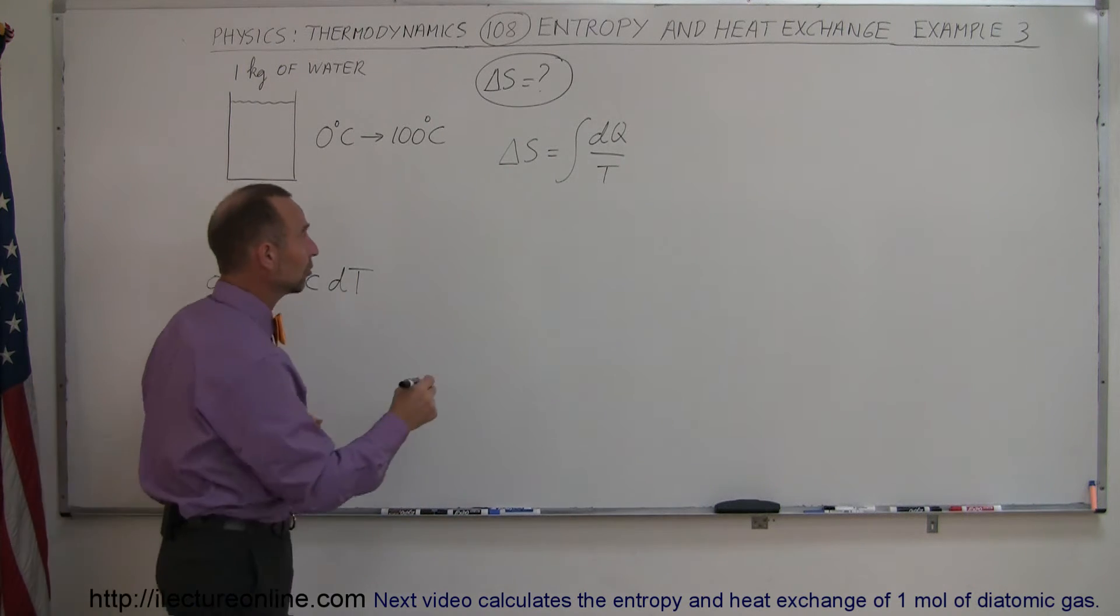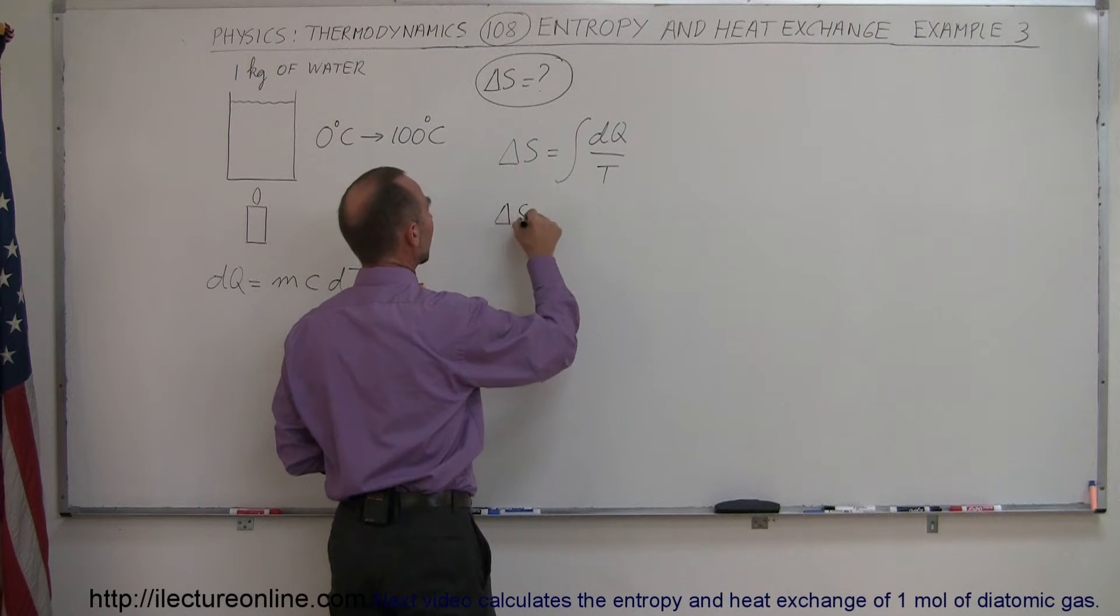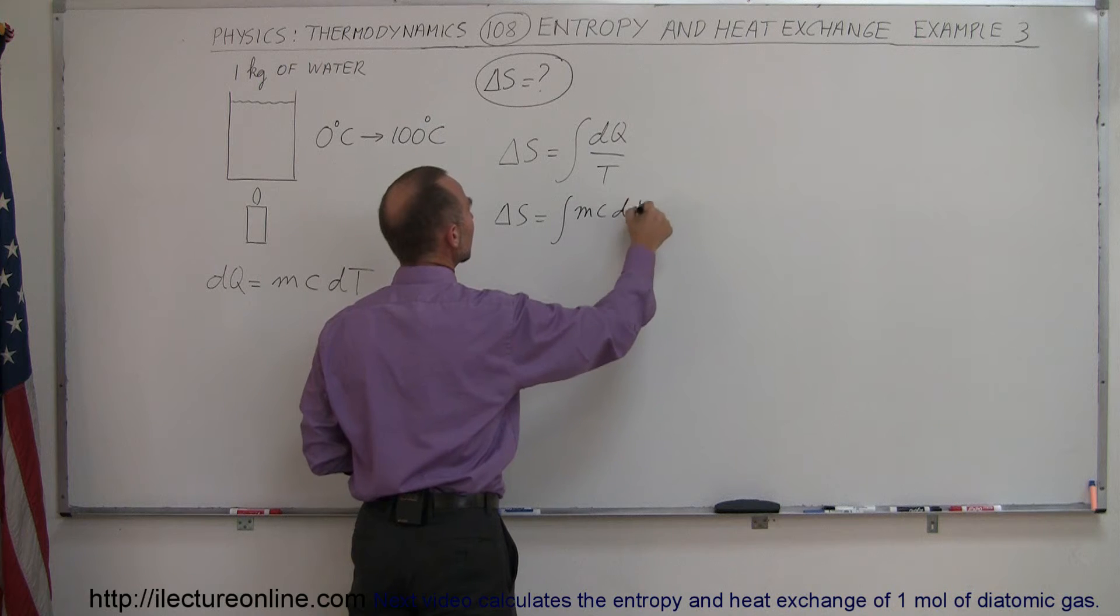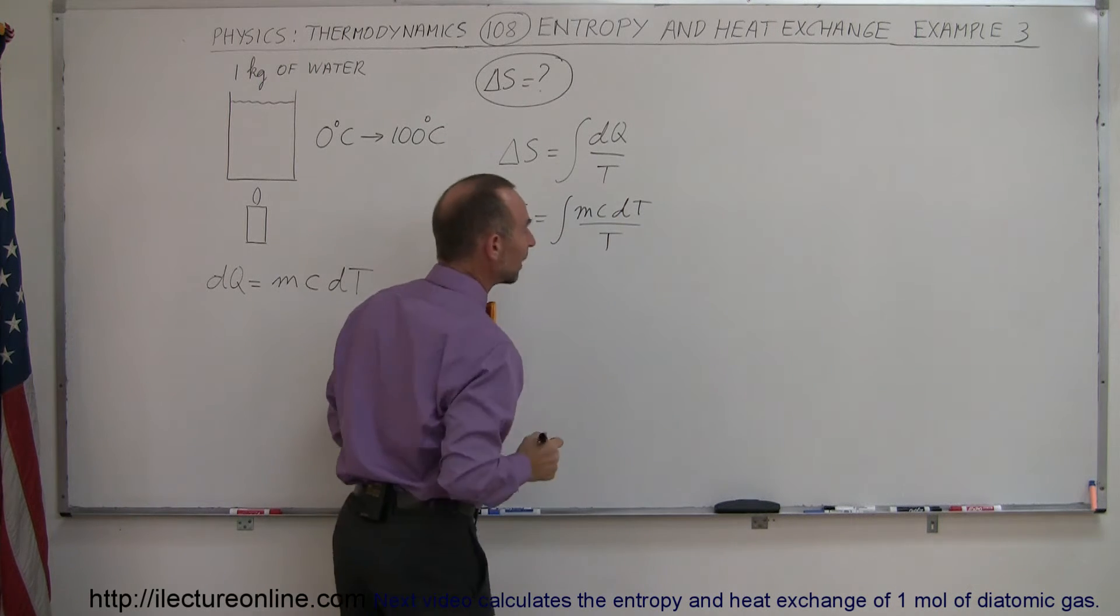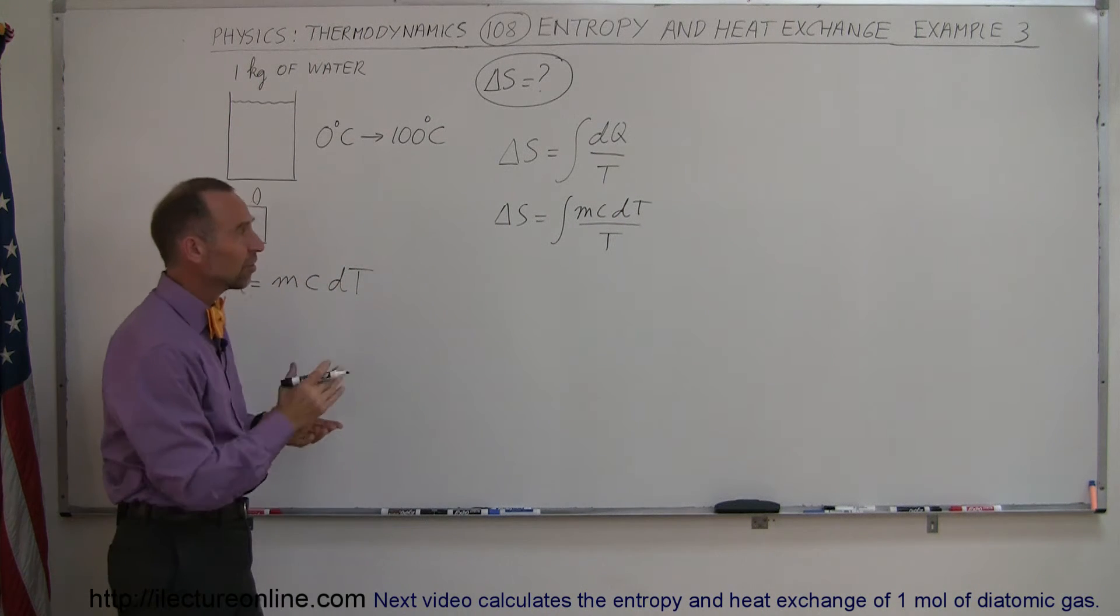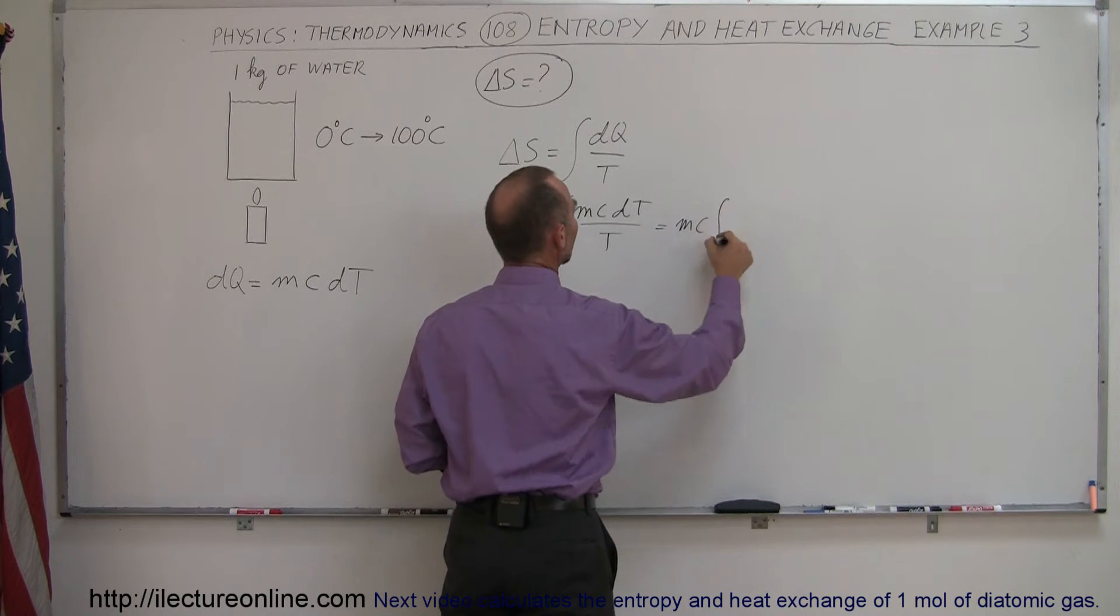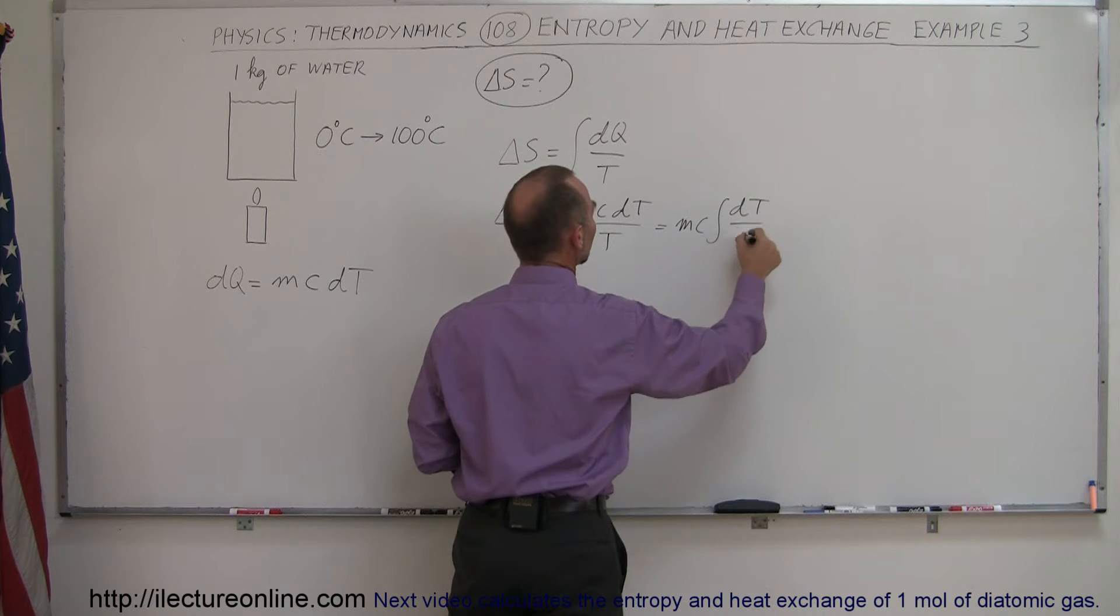So when we replace that in our equation we get delta S is equal to the integral of mc dT over T. Now since m and c are constants we can move those outside the integral sign, so this is going to be equal to mc times the integral of dT over T.